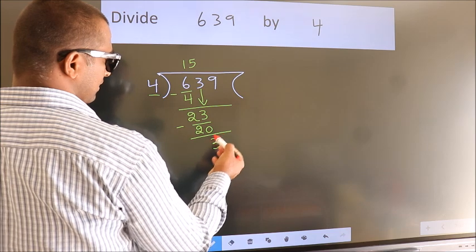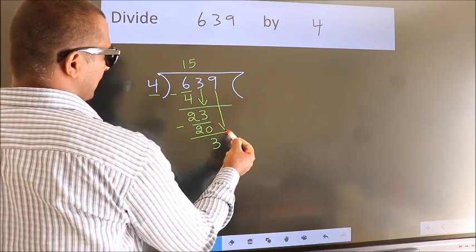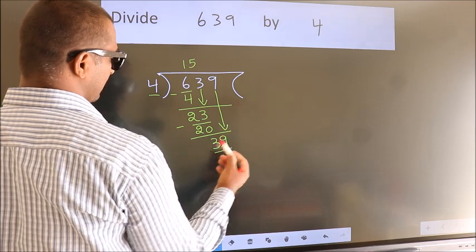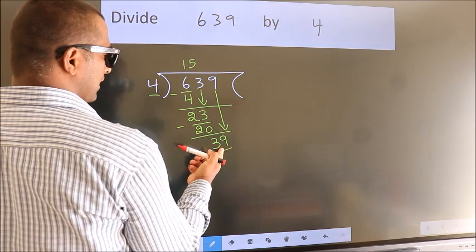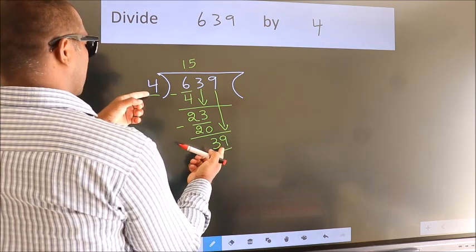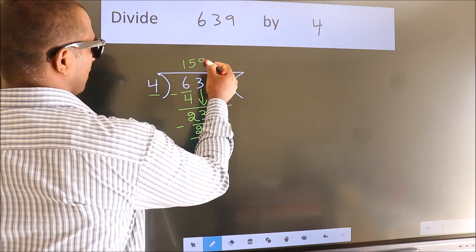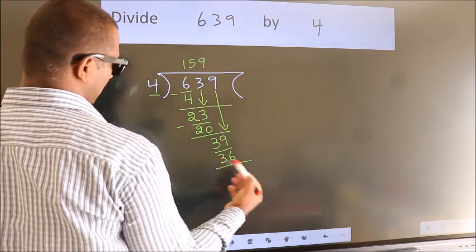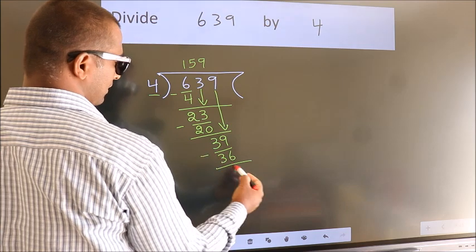After this bring down the beside number. So 9 down. So 39. A number close to 39 in 4 table is 4 nines 36. Now we subtract. We get 3.